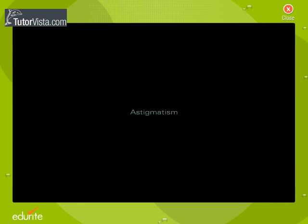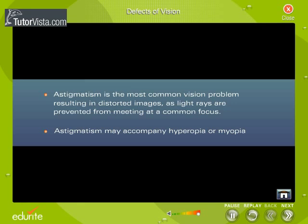Astigmatism is the most common vision problem, resulting in distorted images as light rays are prevented from meeting at a common focus. Astigmatism may accompany hyperopia or myopia.